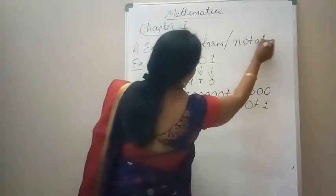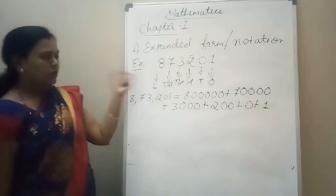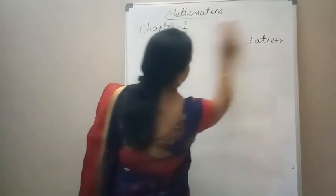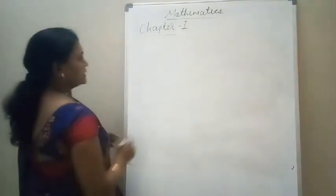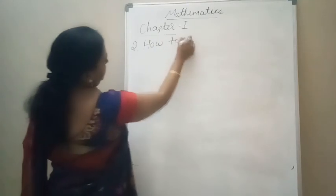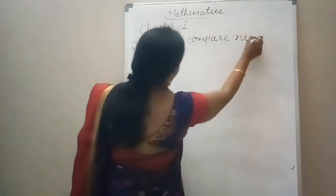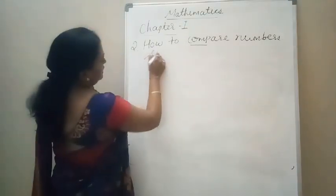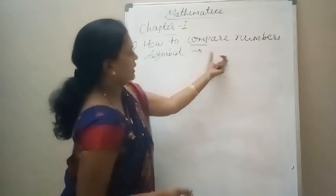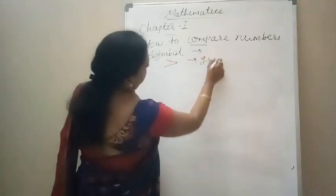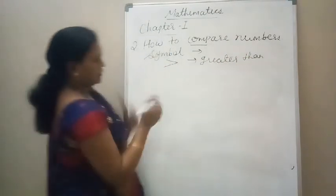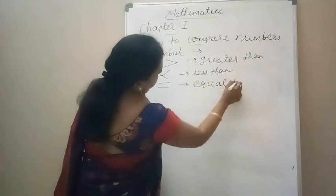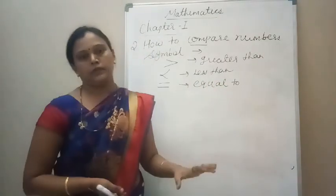Now come to the next point — how can we compare large numbers? When two numbers are given, how can we put the appropriate sign? The symbols we use to compare numbers are: greater than, less than, and equal to.